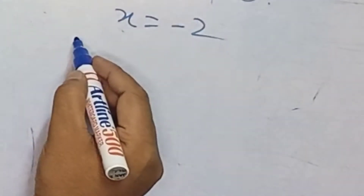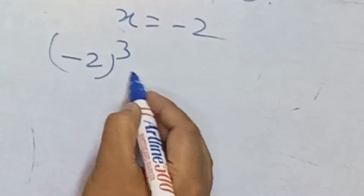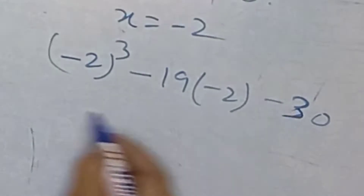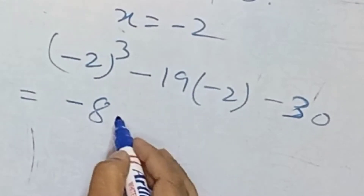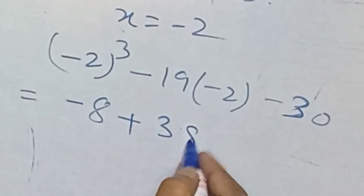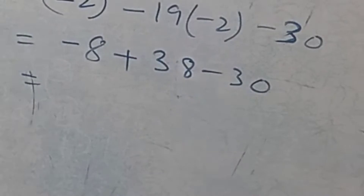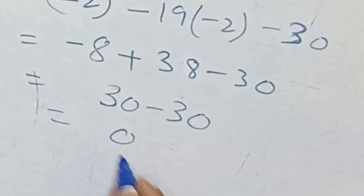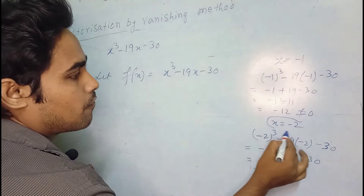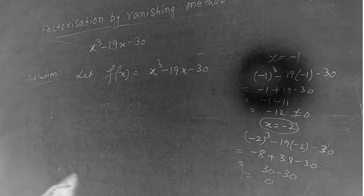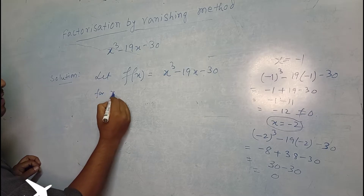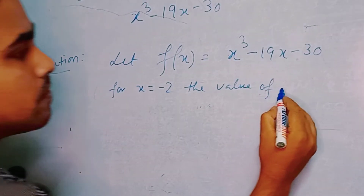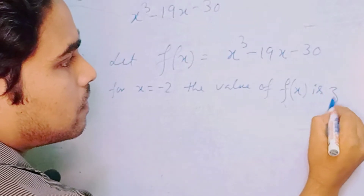So I am taking x equal to minus 2. Substituting: minus 2 cubed minus 19 into minus 2 minus 30 equals minus 8 plus 38 minus 30, which equals 0. So for x equal to minus 2, the value of this polynomial is 0.